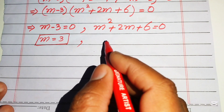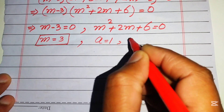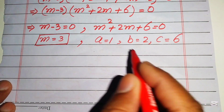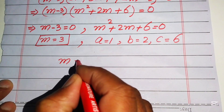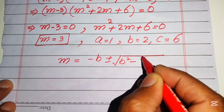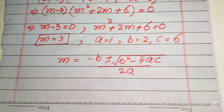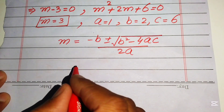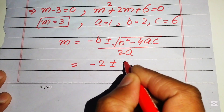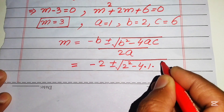We write the coefficients of the quadratic equation: a equals 1, b equals 2, and c equals 6. The quadratic formula is m equals minus b plus or minus the square root of b squared minus 4ac, all divided by 2a. Substituting: m equals minus 2 plus or minus the square root of 2 squared minus 4 times 1 times 6, divided by 2 times 1.